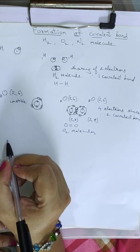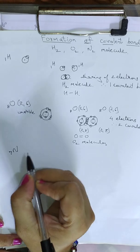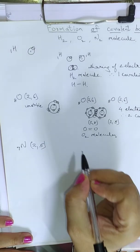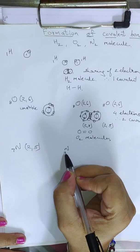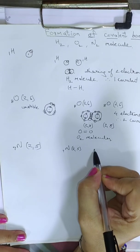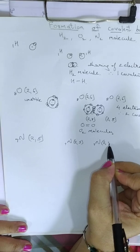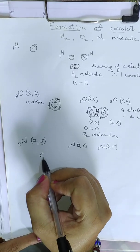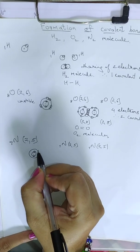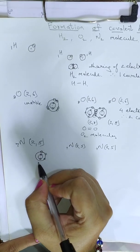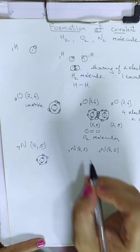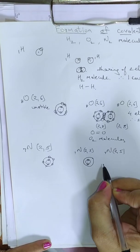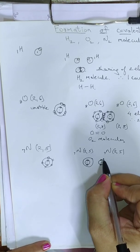Let us take the last example of nitrogen. Its atomic number is 7. Hence, its electronic configuration is 2 and 5. It requires 3 electrons. For the formation of the nitrogen molecule, we require 2 nitrogen atoms, both having configuration 2 and 5. The first orbit contains 2 electrons and the second orbit contains 5 electrons — same for both nitrogen atoms.